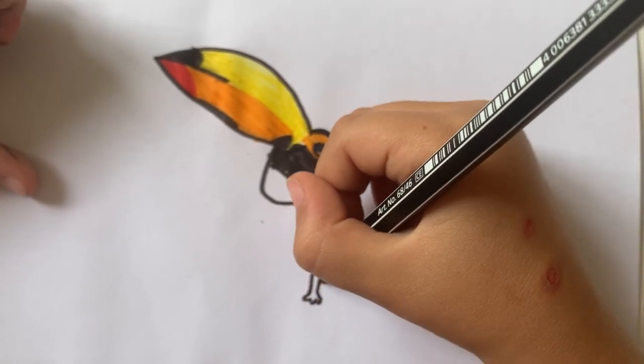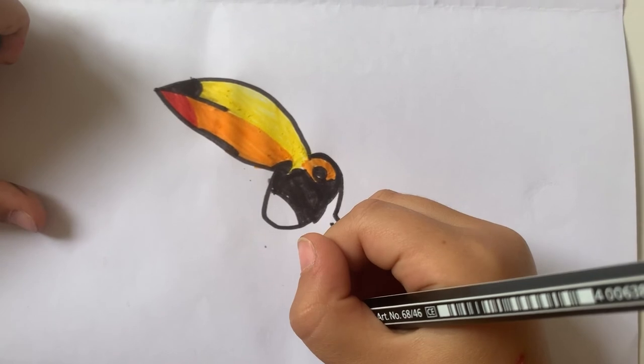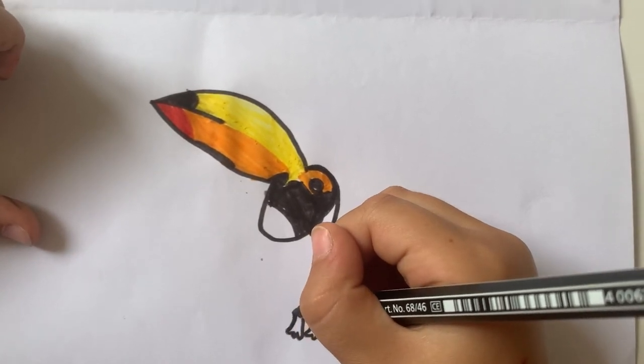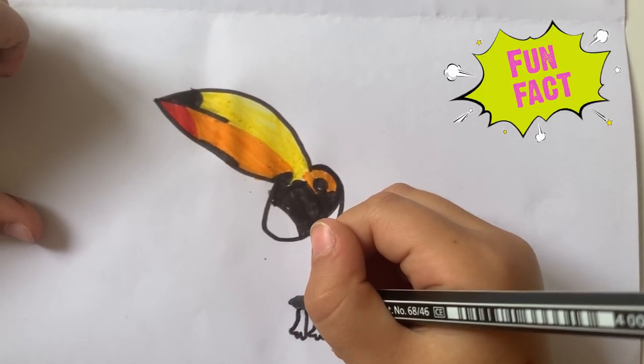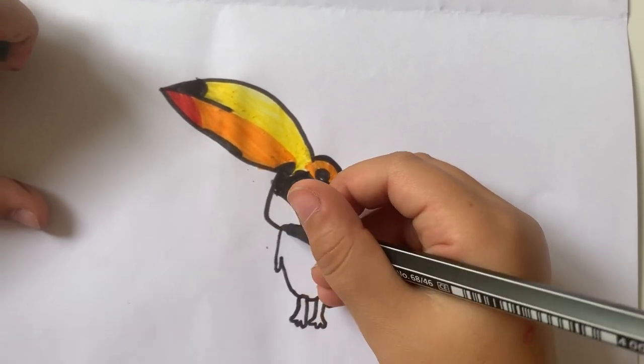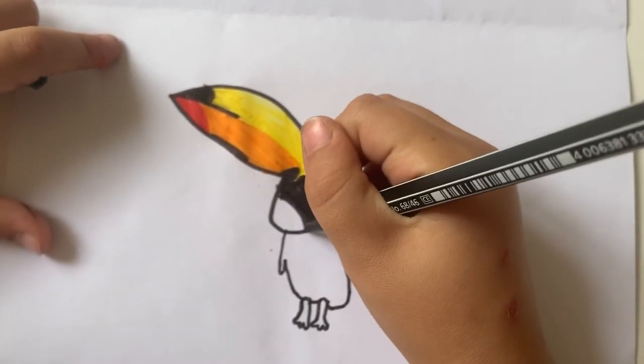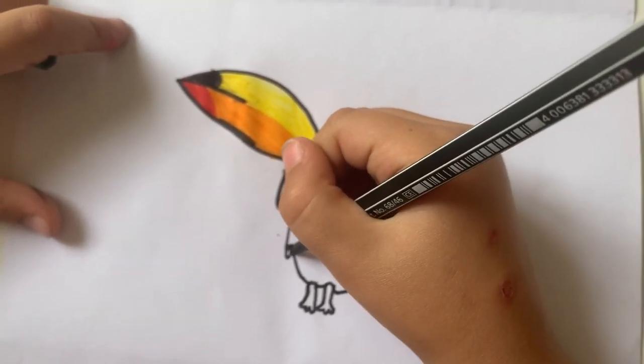Now, do the leg. Toucans tend to hop more than they fly. And make a bit more right there.